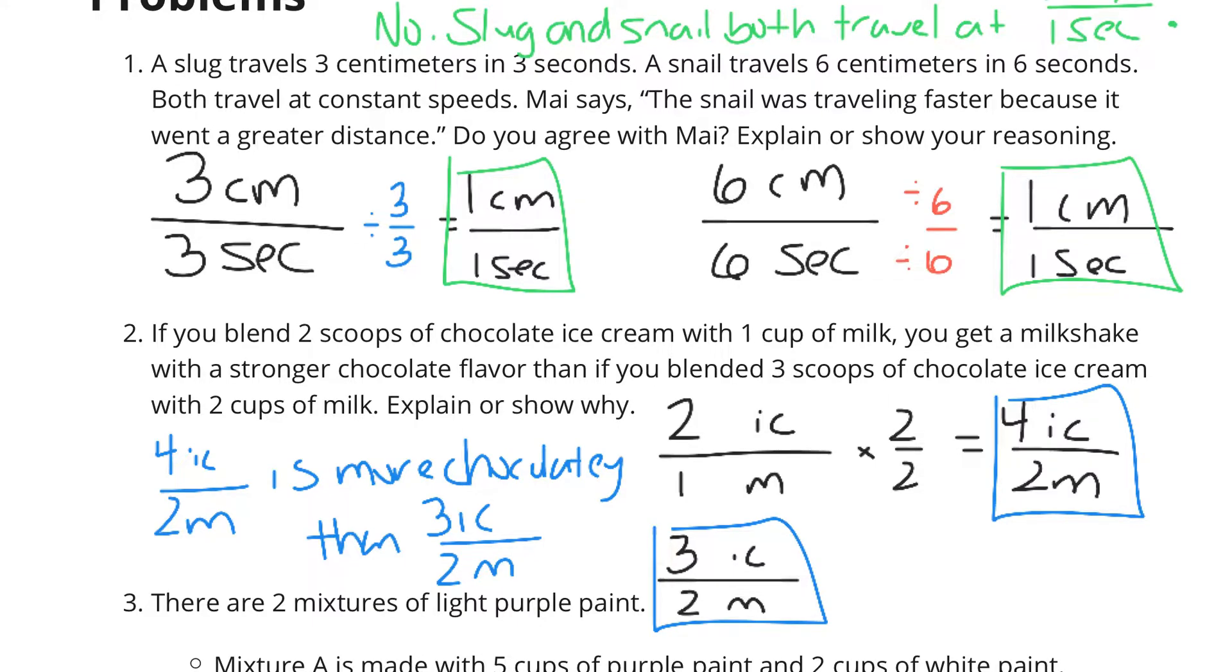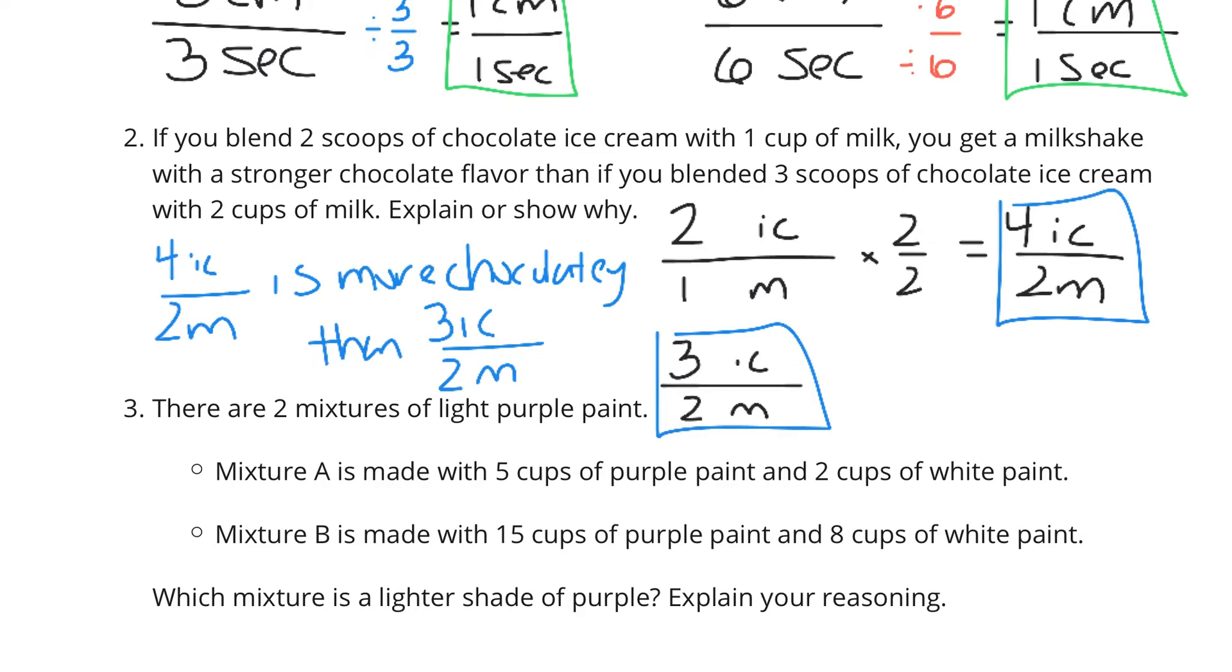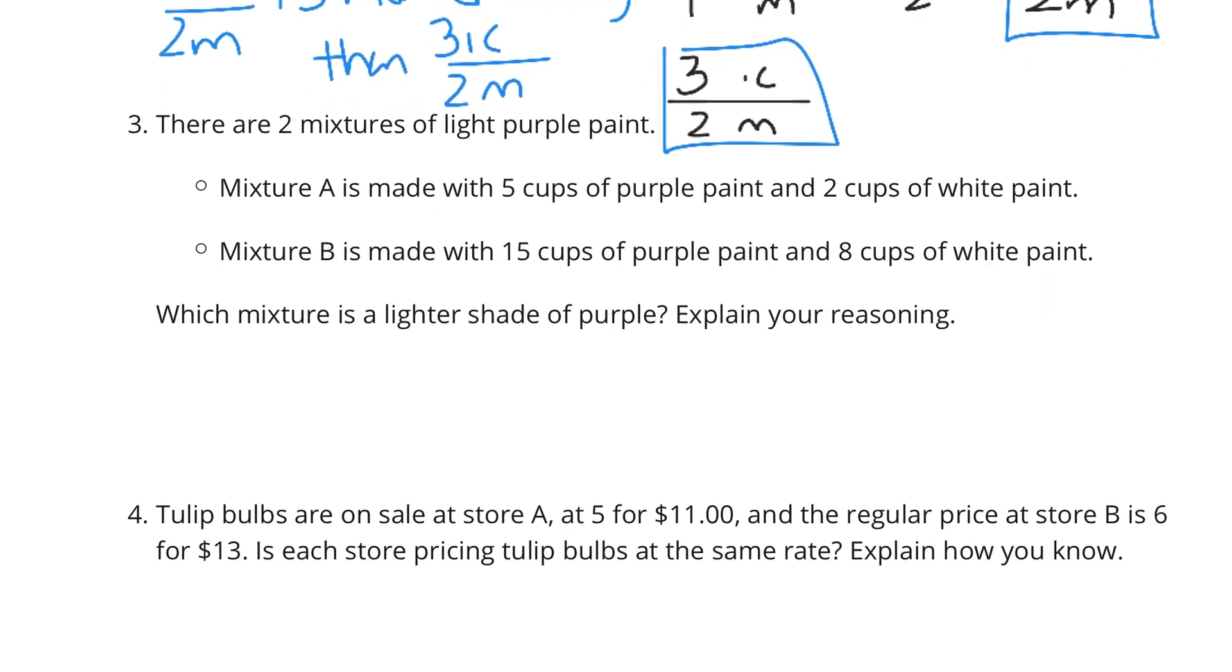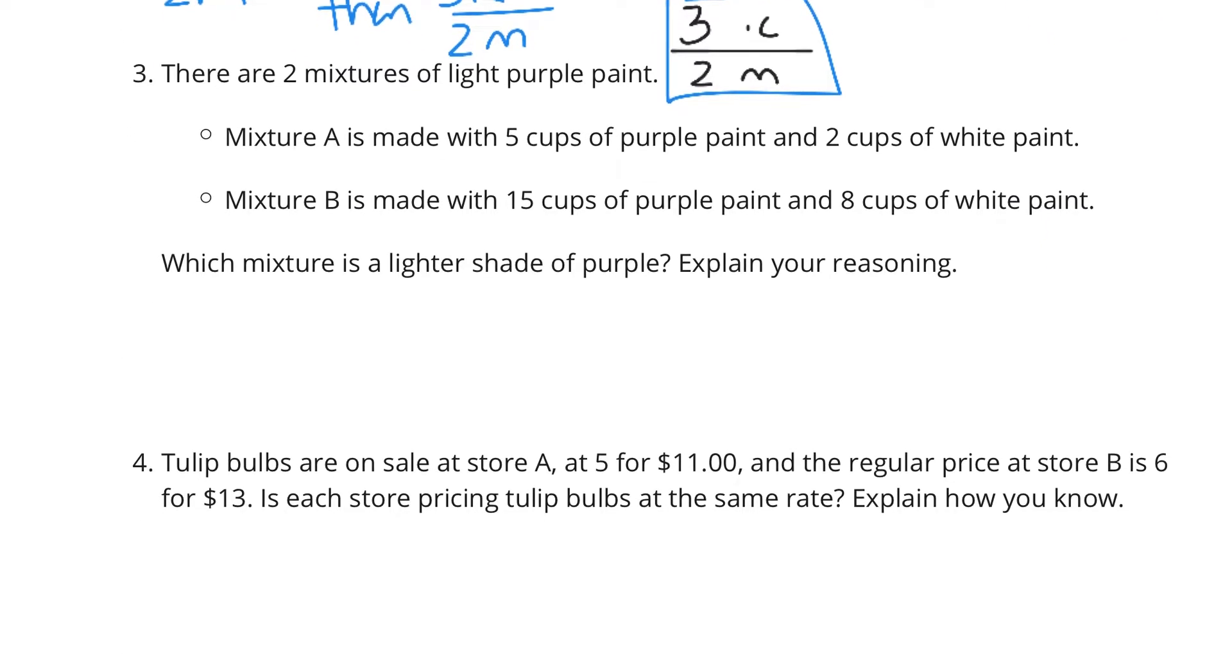All right, number 3. There are 2 mixtures of paint, and it's light purple. Mixture A is made with 5 cups of purple and 2 cups of white. Mixture B is made with 15 cups of purple and 8 cups of white. Which mixture is a lighter shade of purple? Explain or show your reasoning.